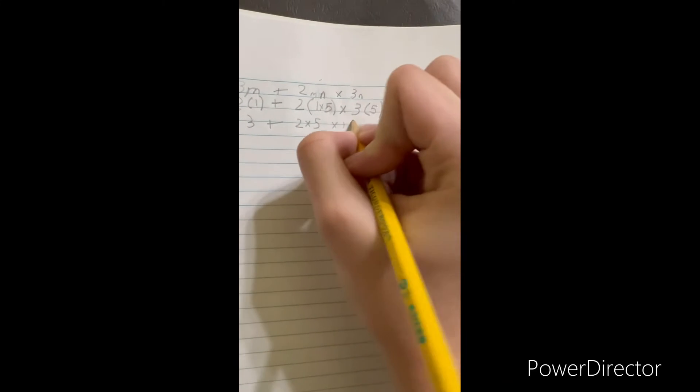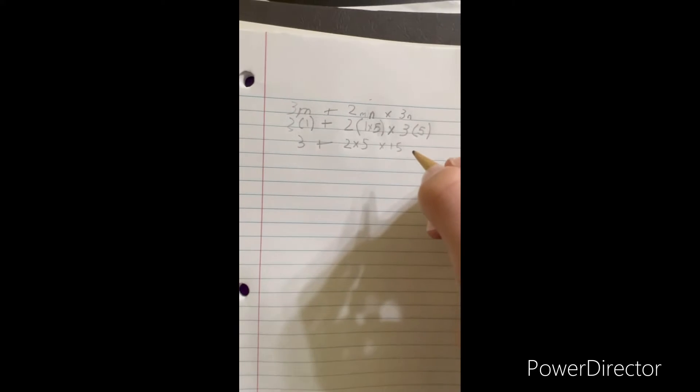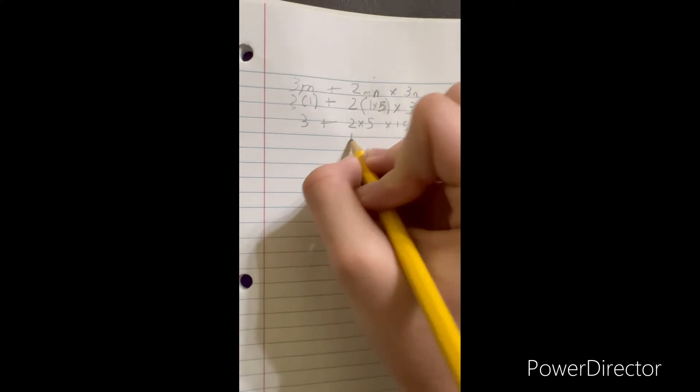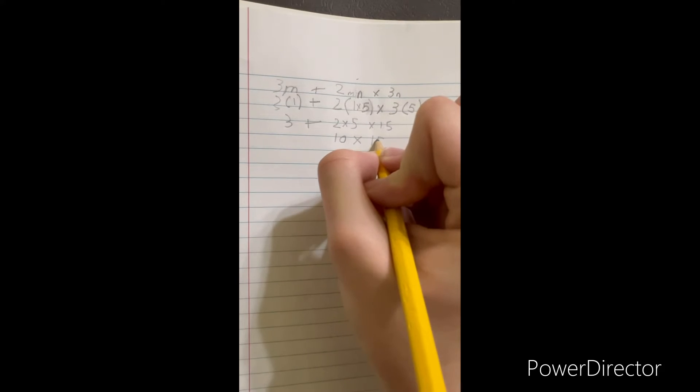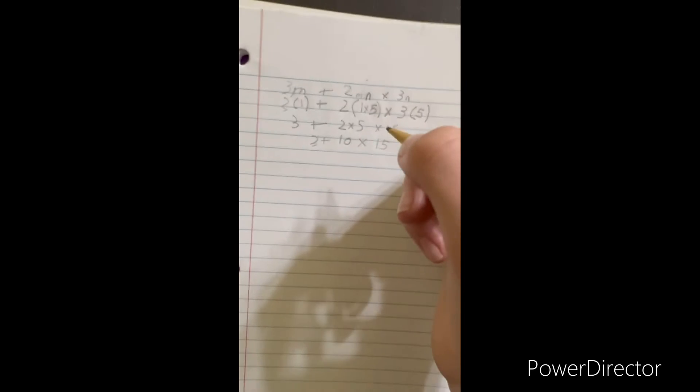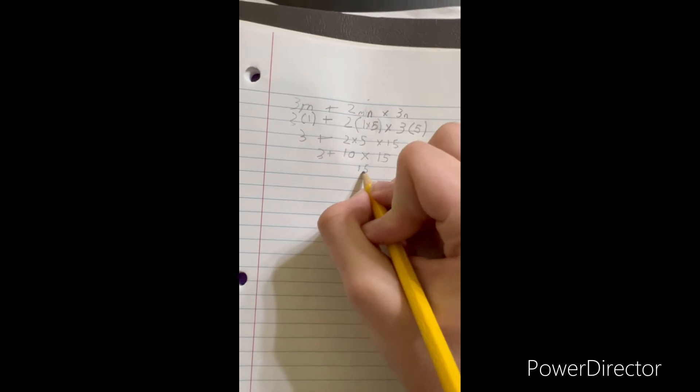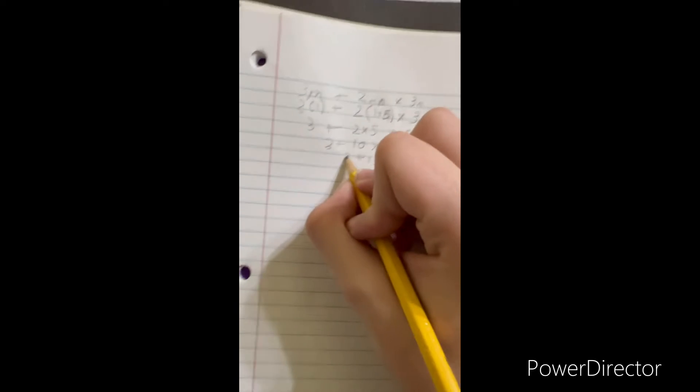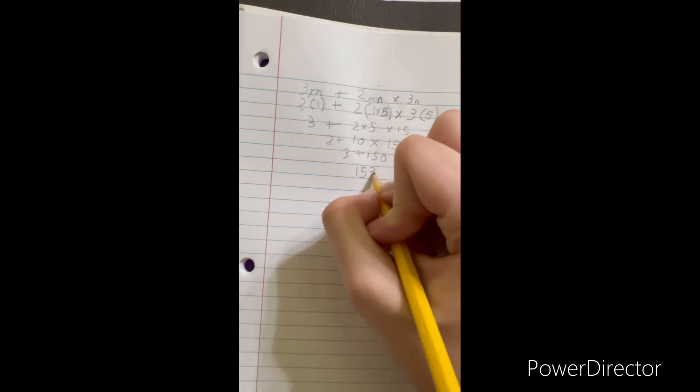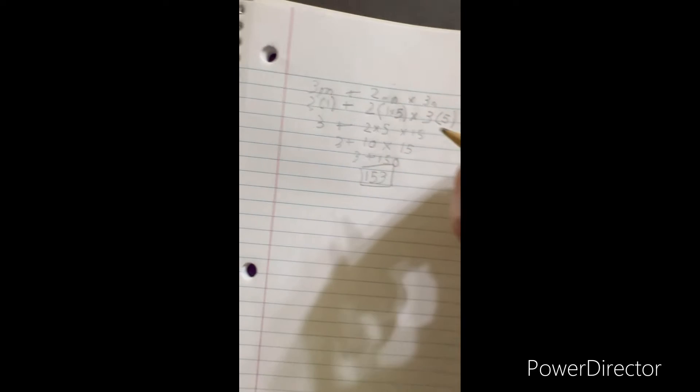Fifteen. Next is ten times fifteen. Bring down your three: 150 plus three equals 153. First you plug these numbers into the letters...